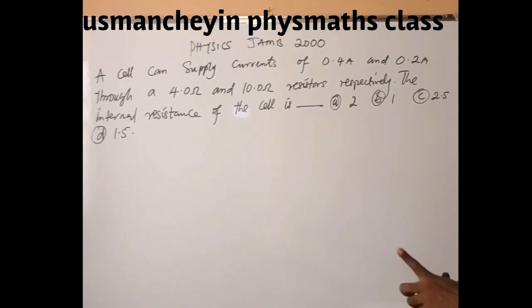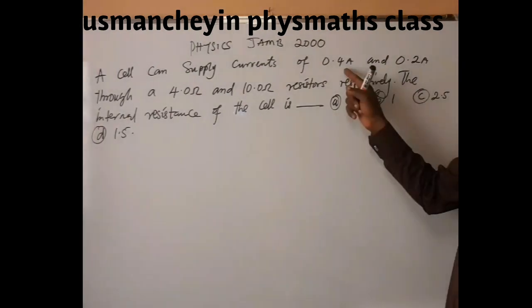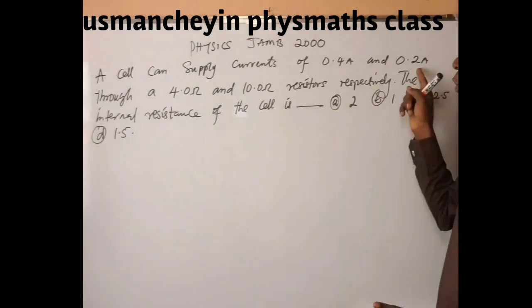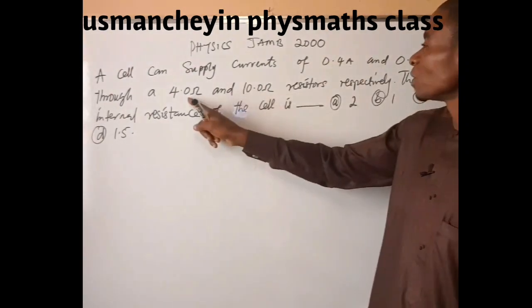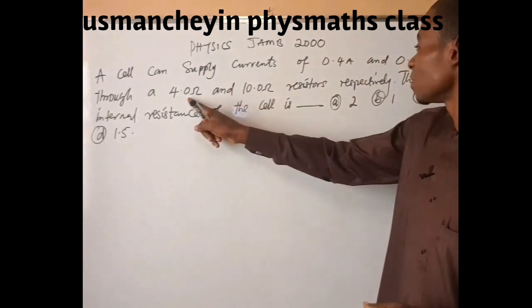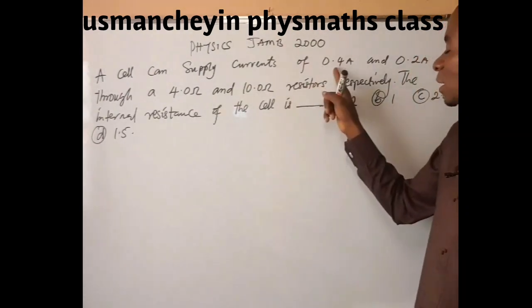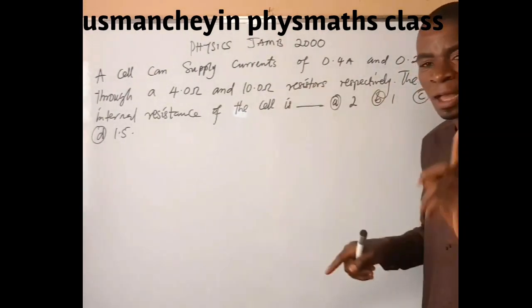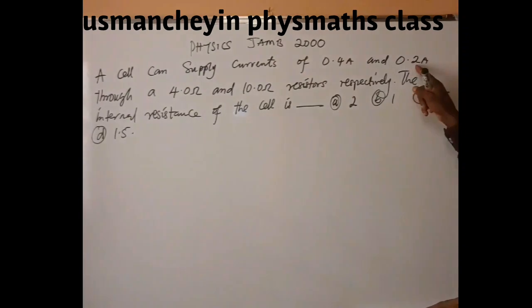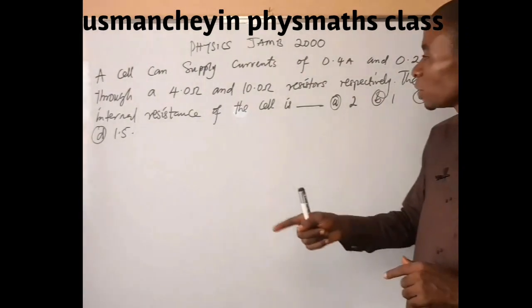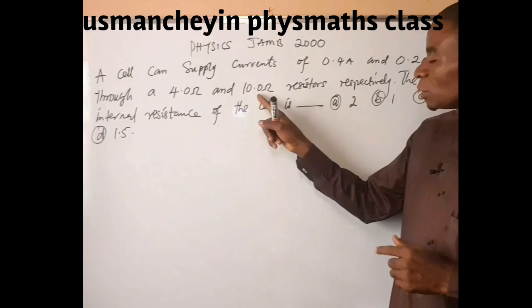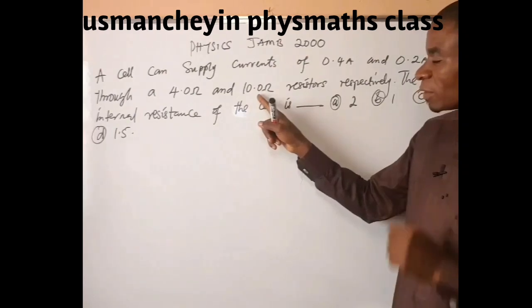It means that one cell can supply these particular currents. When a 4 ohm resistor is placed in the circuit, the cell supplies 0.4 ampere, and when a 10 ohm resistor is placed in the circuit, the same cell produces 0.2 ampere.